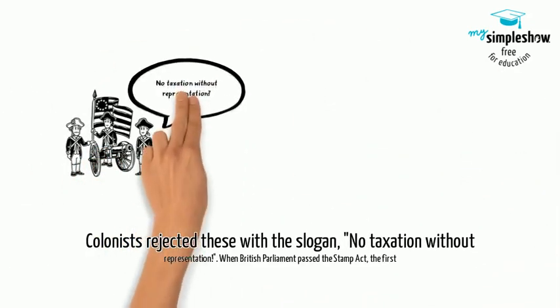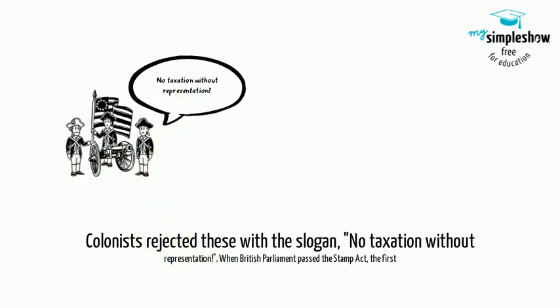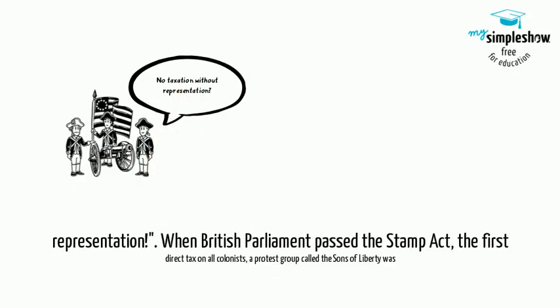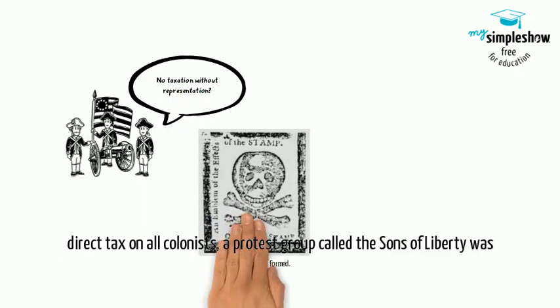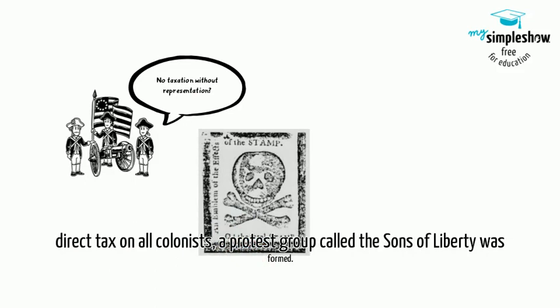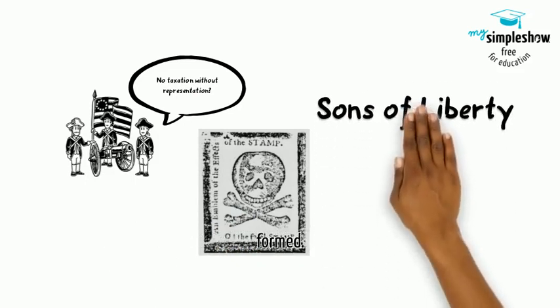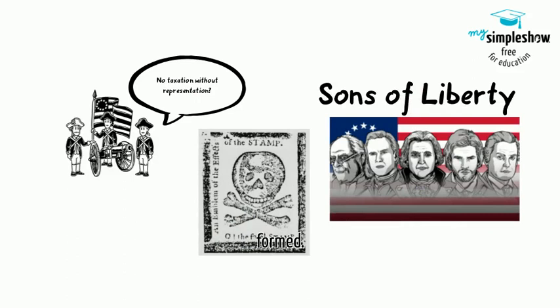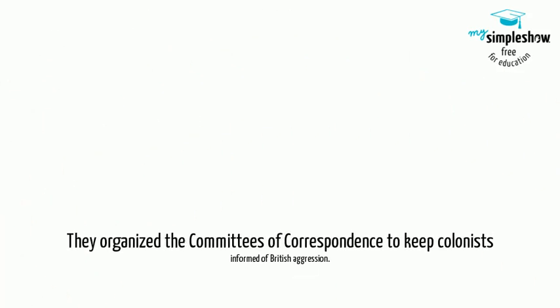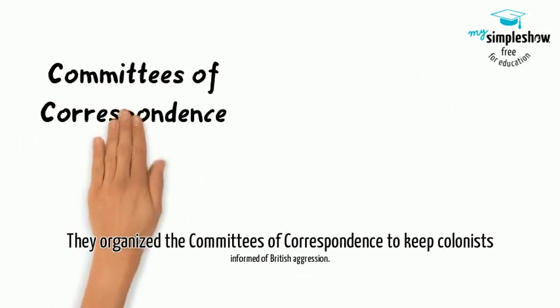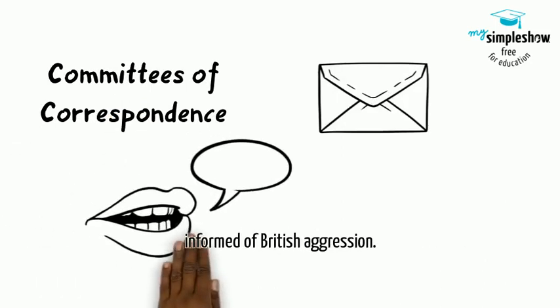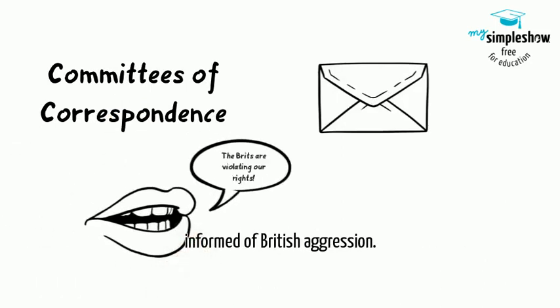Colonists rejected these taxes with the slogan "No Taxation Without Representation." When British Parliament passed the Stamp Act, the first direct tax on all colonists, a protest group called the Sons of Liberty was formed. They organized the Committees of Correspondence to keep colonists informed of British aggression.